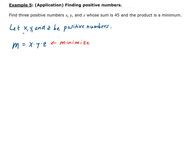Our constraint is that we want the sum of x, y, and z to be 45. So we have x plus y plus z equals 45. This is our constraint.